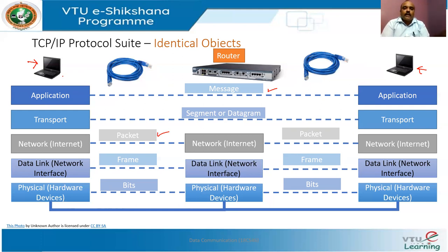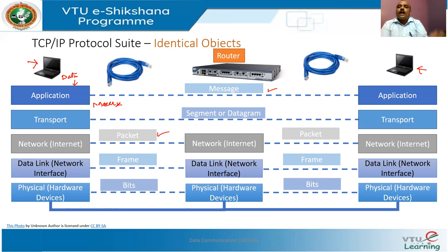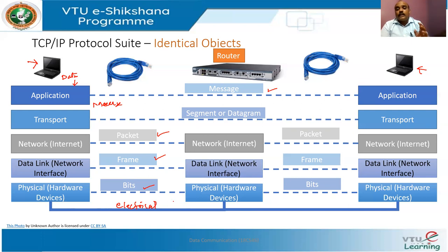The data generated by the application, such as email, has its own structure. Application generates a block of data called a message. The transport layer converts messages into segments. The network layer takes segments and converts them into packets — conversion here means adding overhead bits to achieve a specific goal. The data link layer's identical object is called a frame, while the physical layer deals in bits. On the wire, only electrical signals are transmitted.